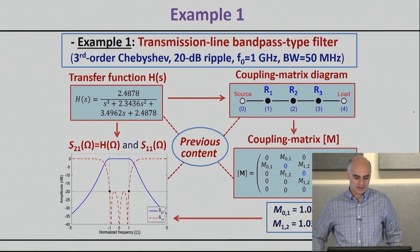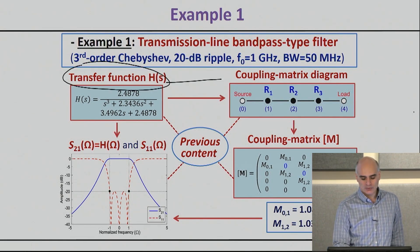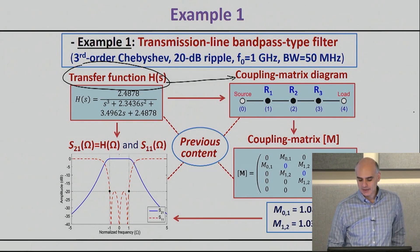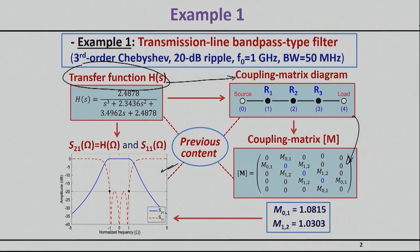What we have covered so far is going from the available transfer function to our coupling matrix diagram, finding the actual coupling matrix synthesis approach, and then calculating S21 and S11 in the normalized frequency domain. In this particular case, I'm going to focus on a third order filter. These are the coupling matrix values that all of you should be able to calculate by now for a simple third order Chebyshev, 20 dB ripple, at one gigahertz with this much bandwidth.